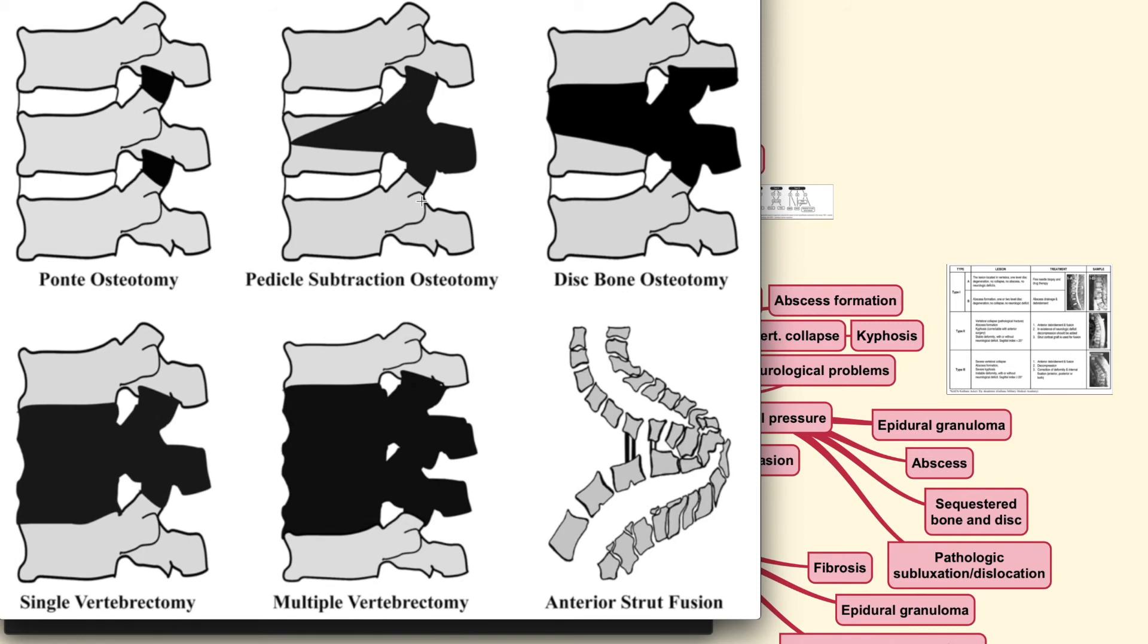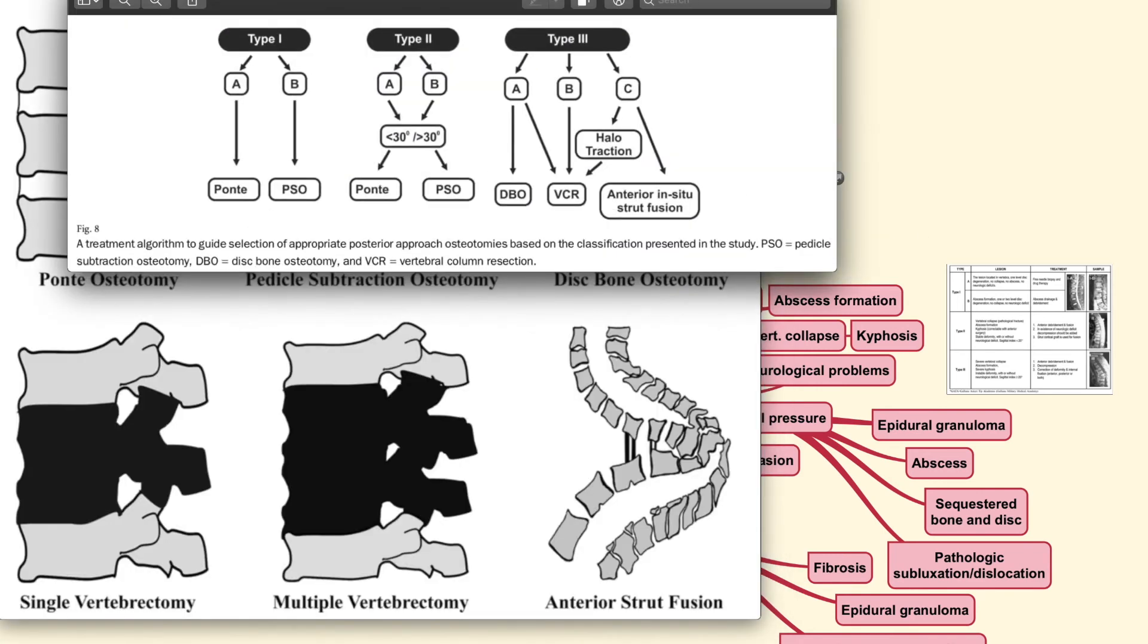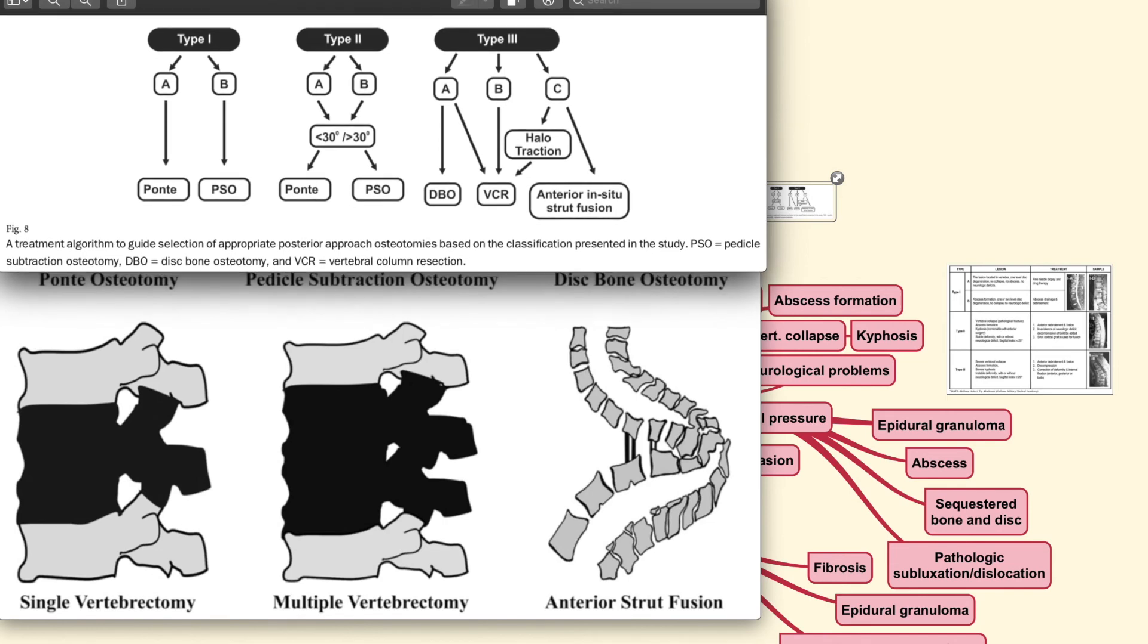The osteotomy could be done through around the area of facet, you could take out the whole pedicle, you could take out half the bone along with the disc, you could even take out the whole vertebrae or even multi-vertebrectomy or also only salvage procedures such as anterior strut fusion. Now, these conditions to help you guide which type of osteotomy you should use is why you need this classification.